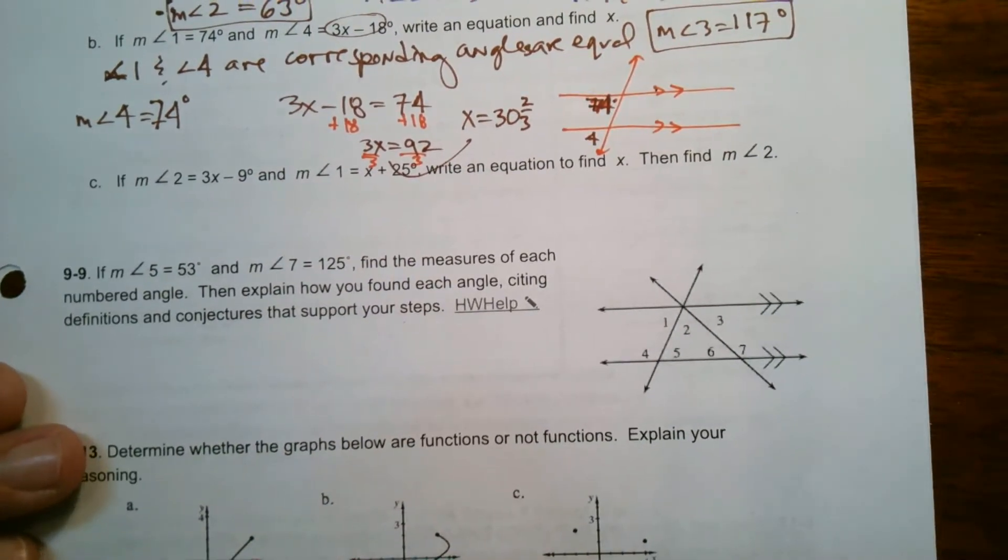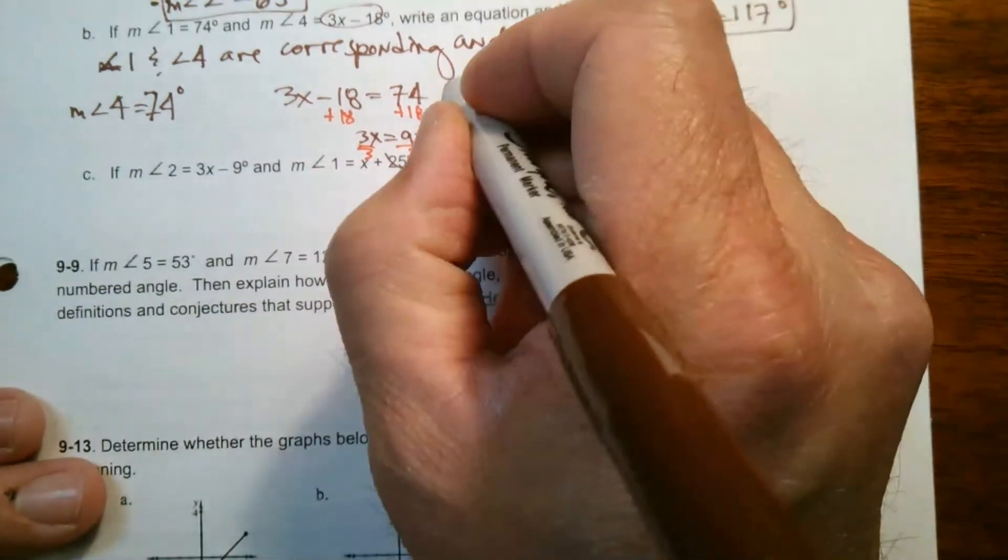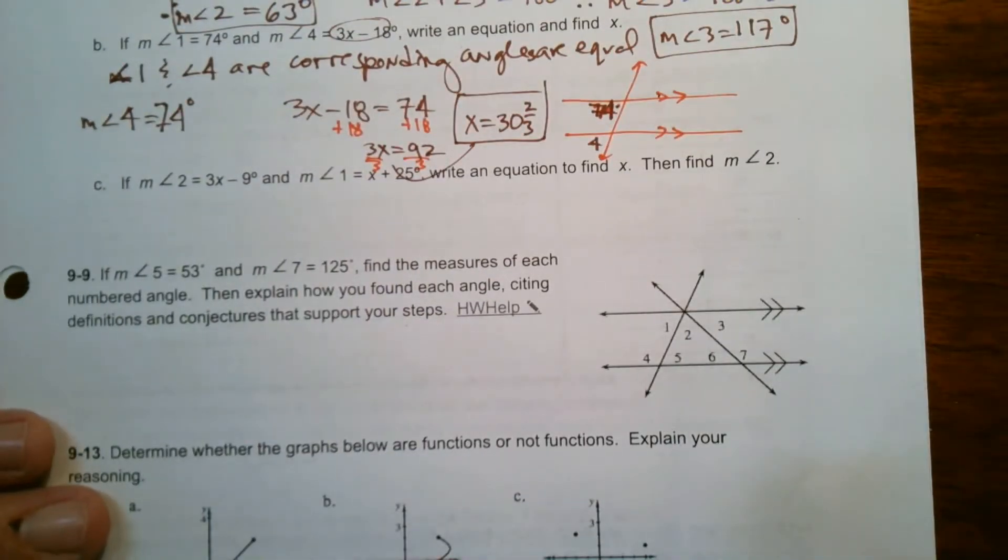30 and two thirds. Make sure I did my math right there. Yeah. So that's my x, 30 and two thirds.